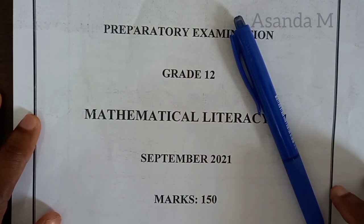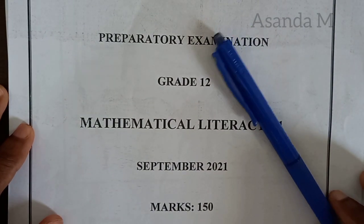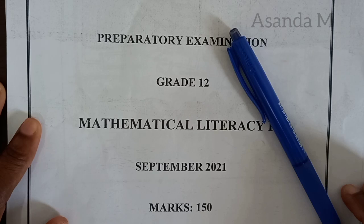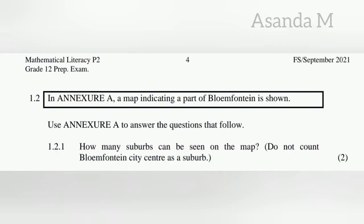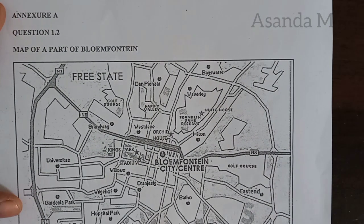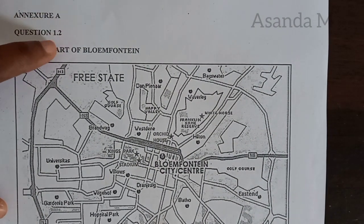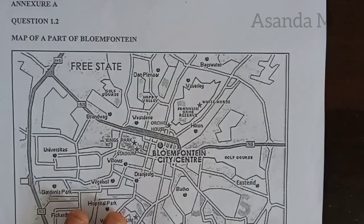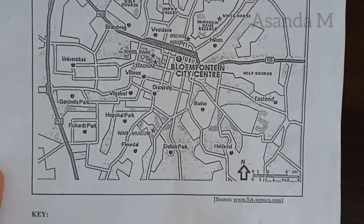Welcome, Mathematical Literacy learners, to Paper Two - Free State September 2021. Question 1.2 says: in Annexure A, a map indicating a part of Bloemfontein is shown. Use Annexure A and answer the questions that follow. The annexure is labeled '1.2 Map of Part of Bloemfontein' and that's exactly what we're going to use.